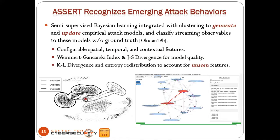That was our first system, Capture — forecasting the future a few days to a week out. Assert, our second prototype, deals with how we divide and conquer and separate evidence in a timely manner so we can recognize emerging attack behaviors for prediction. Because it's timely, we need a way to generate empirical attack models by combining Bayesian learning and clustering algorithms together, so that as evidence comes in we can recognize and update the models iteratively.